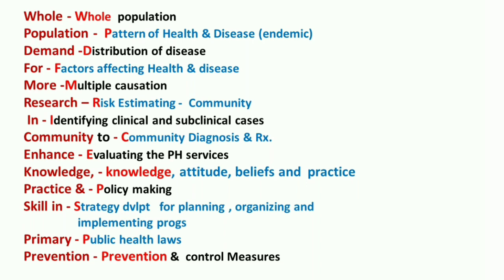F stands for factors affecting health and diseases — research in community nursing helps to identify the various factors which influence the health and disease of community people. M stands for multiple causation — we can identify various multiple causes of a particular problem which is prevalent in the community among the population.